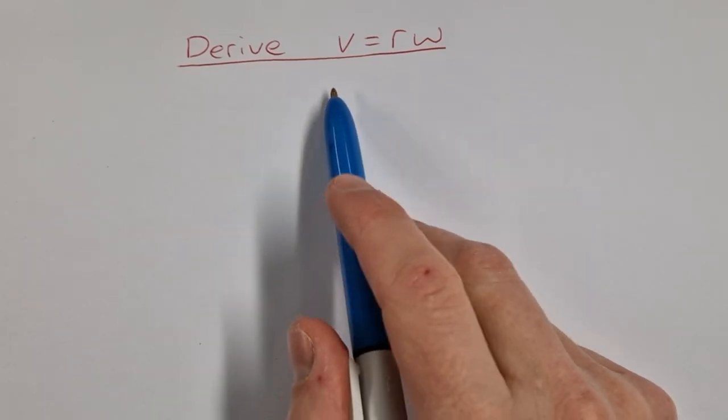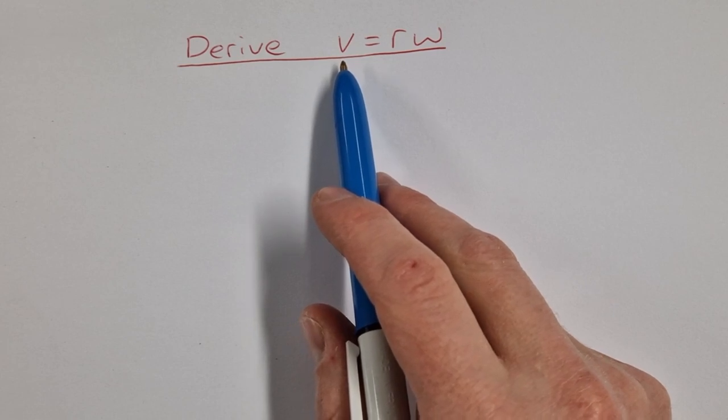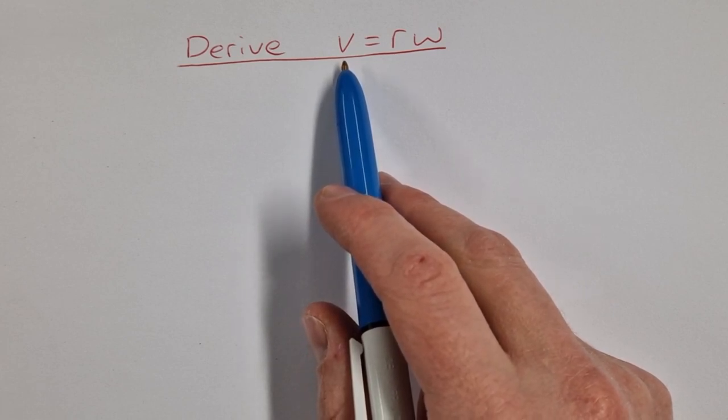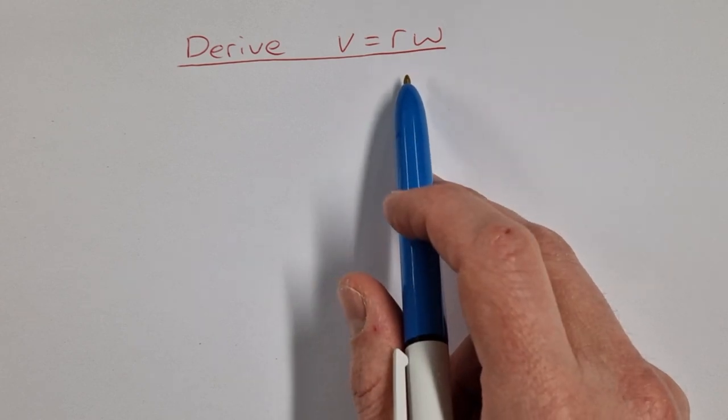Okay, so in this video we're going to derive the formula v is equal to r omega, that is the linear velocity of an object in circular motion is equal to the radius of the circle times the angular velocity omega.